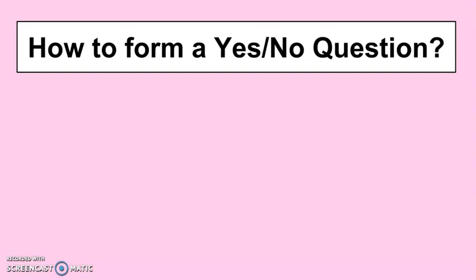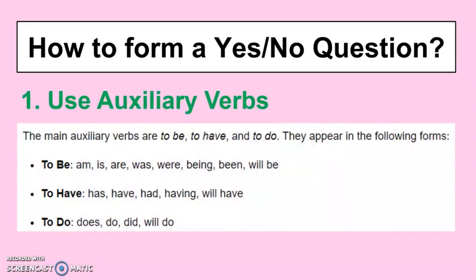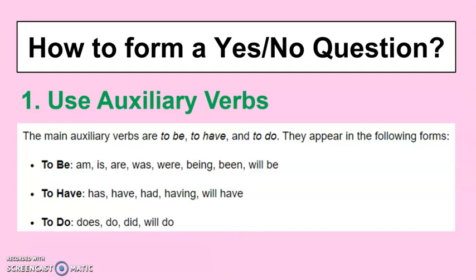Now, how do you form yes/no questions? We use auxiliary verbs or modal verbs. The main auxiliary verbs are 'to be,' 'to have,' and 'to do,' appearing in forms such as: am, is, was, were, being, will be; has, have, had, having, will have; and does, do, did, will do. These verbs should always be at the beginning of your question.